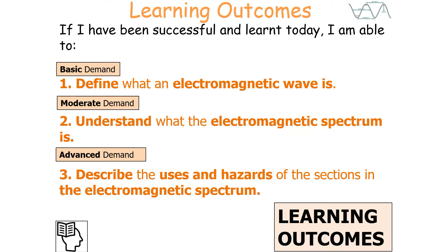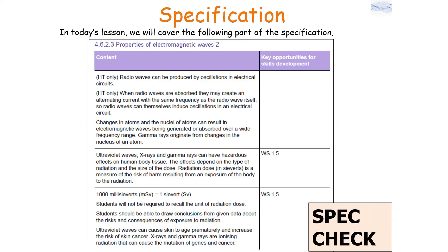In today's lesson we're going to understand the different properties of electromagnetic waves. If we're successful, we can define what an electromagnetic wave is, understand what the electromagnetic spectrum is, and describe the uses of the different sections in the electromagnetic spectrum.